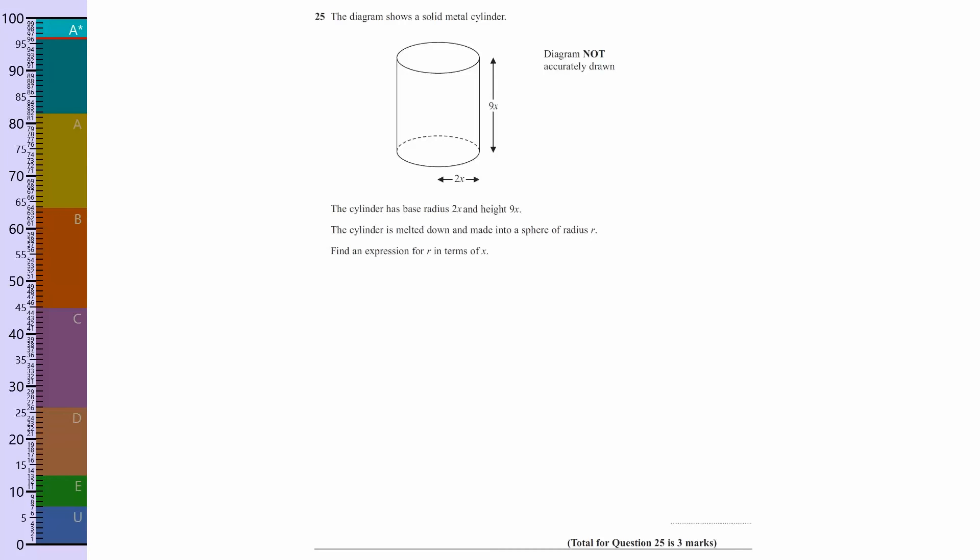So the cylinder has a base radius of 2x and a height of 9x. What I'm doing is checking here to see whether anything is not shown in the diagram. The cylinder is melted down and made into a sphere of radius r. Find an expression for r in terms of x.